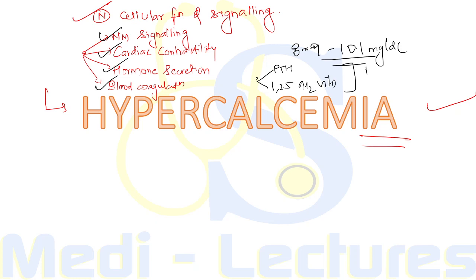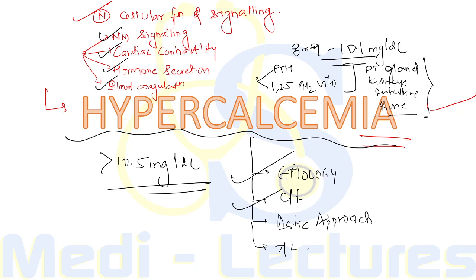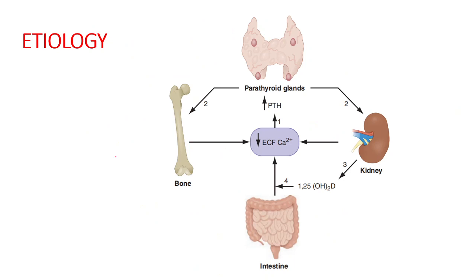This balance is maintained by the parathyroid gland, kidneys, intestine, and bones — these are the main organs that take part in calcium regulation. Hypercalcemia is defined by calcium levels more than 10.5 mg/dL. We will cover the etiology, clinical manifestations, diagnostic approach, and treatment of hypercalcemia.